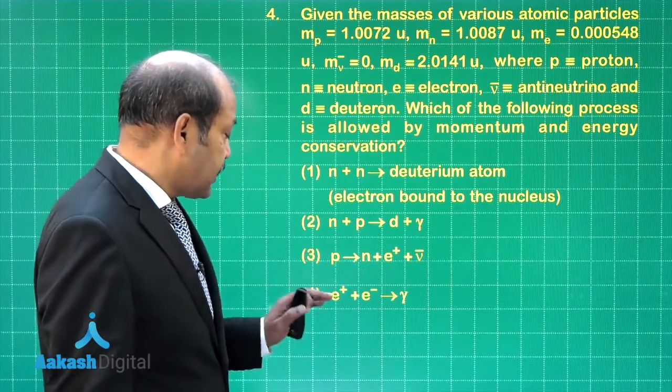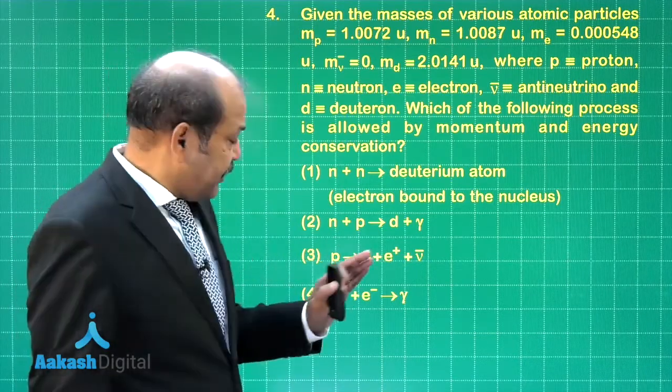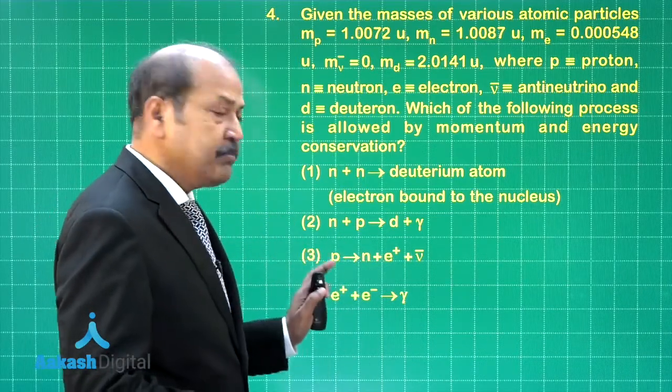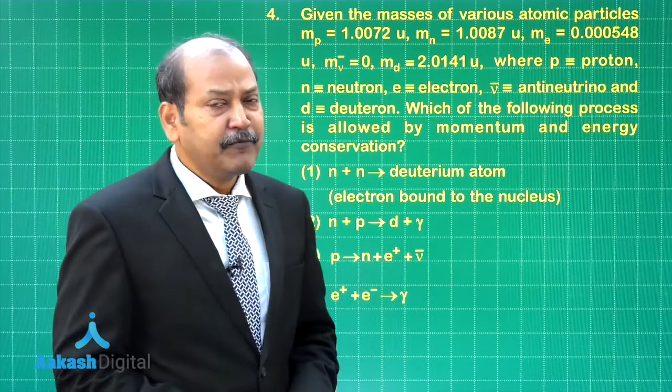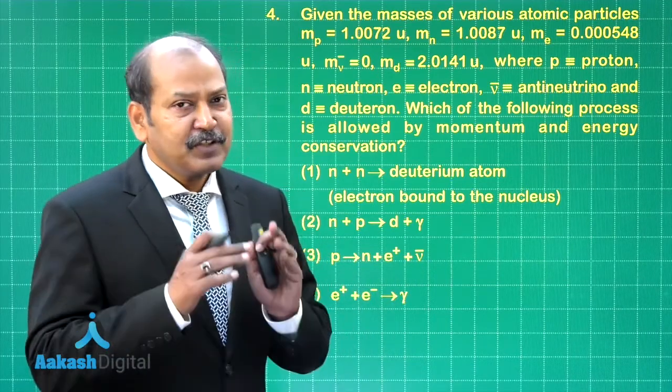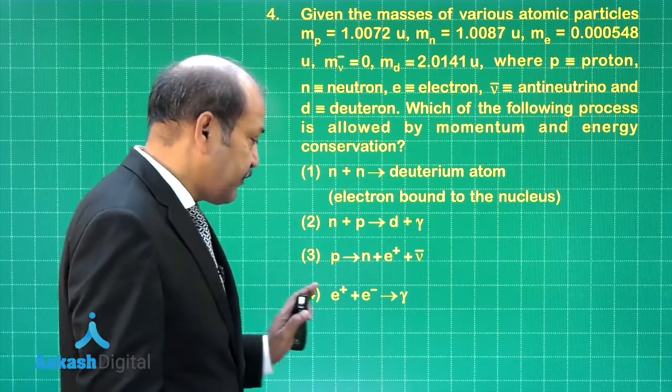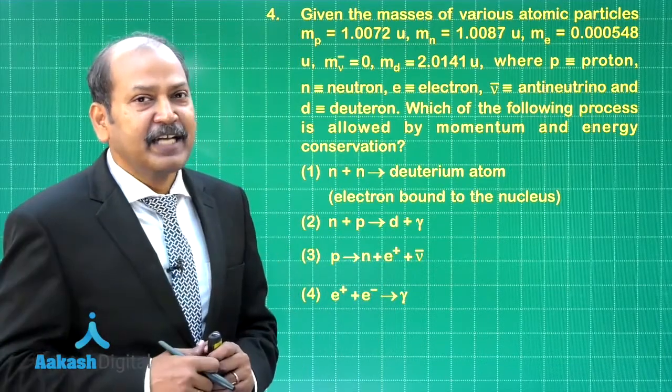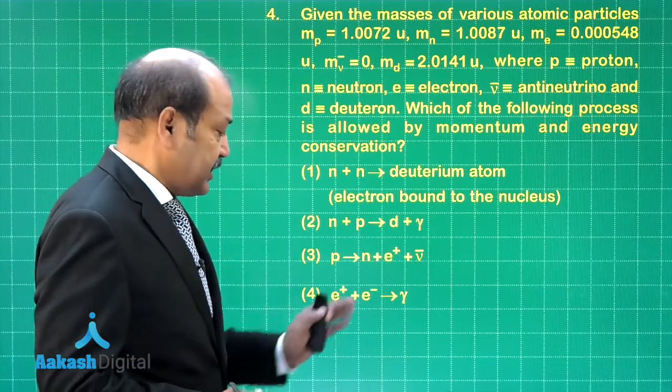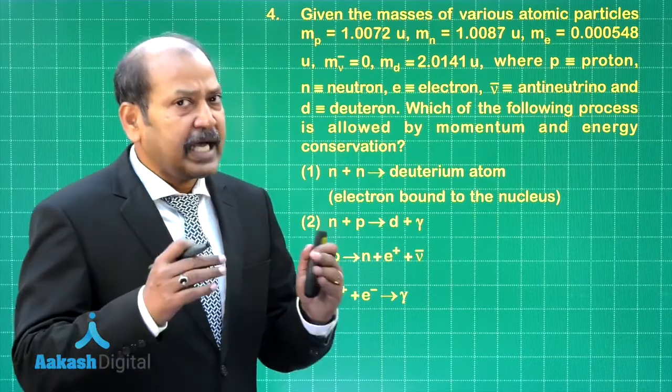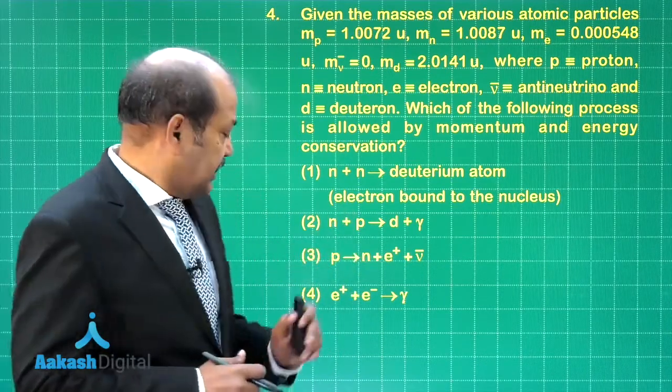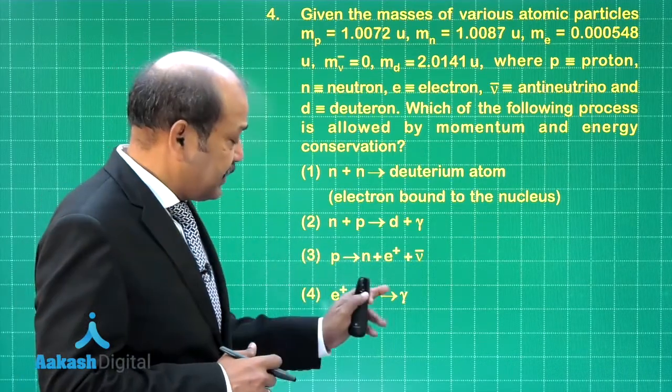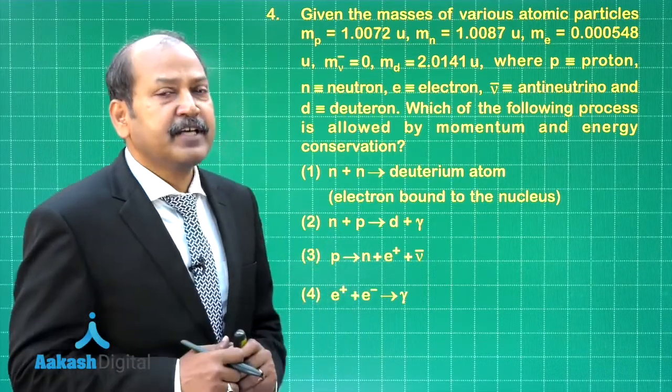And finally, for the fourth process, the momentum cannot be conserved. Because if we consider that the momentum on the left hand side is zero, the gamma photon has a momentum. So the momentum conservation principle is violated if we allow this kind of equation to be considered as valid. In fact, if they had been another gamma photon, that reaction is very much allowed. That in fact is known as electron positron annihilation. But with only one gamma photon, this reaction is not possible.